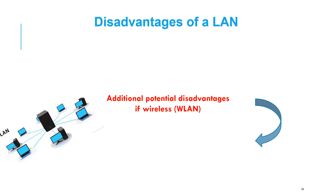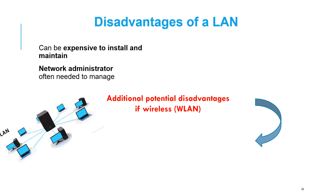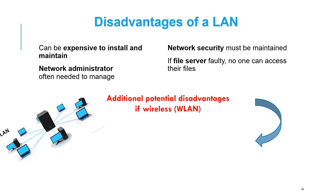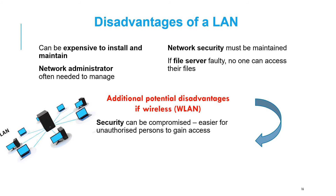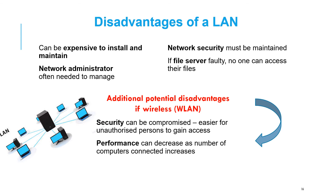The disadvantages of a LAN include: it can be expensive to install and maintain; you need a network administrator to manage it; you have to maintain network security; and if the file server is faulty, no one can access files and work stops. For a wireless LAN, there are additional disadvantages: security can be compromised because you can tap into the network through Wi-Fi; performance can decrease if too many people are connected; and electrical interference can cause signal loss.